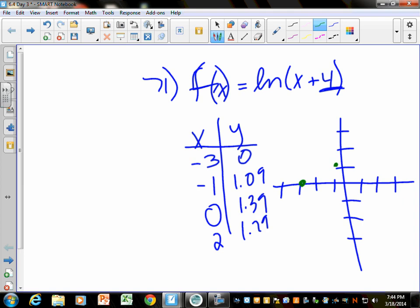At negative 1, it's a little bit above 1. At 0, it's a little bit more above 1. At 2, it's a little bit more. And again, it's going to go like that, and it's going to have an asymptote now at negative 4. If I'm grading these, I'm looking for that asymptote and the general shape.